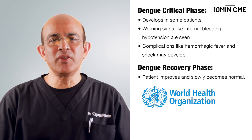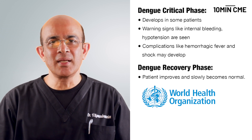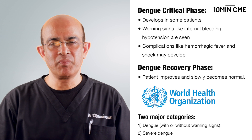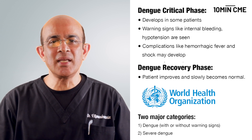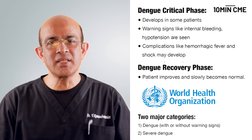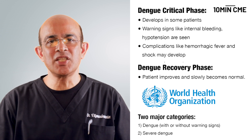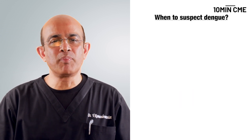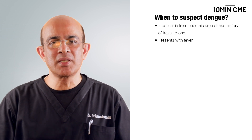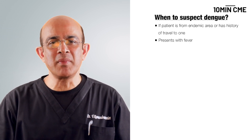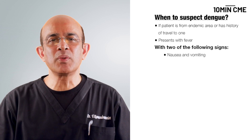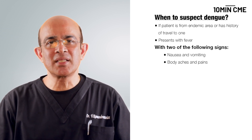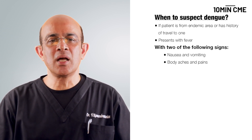The WHO definition of 2009 uses clinical and laboratory evidence to diagnose dengue. It has categorized dengue as dengue with or without warning signs, and the second stage being severe dengue. Clinically, probable dengue is diagnosed when a person who lives or travels to a dengue endemic area presents with fever and two of the following signs: nausea, vomiting,